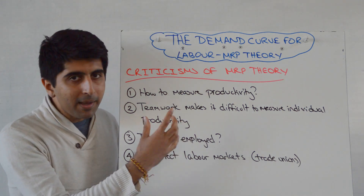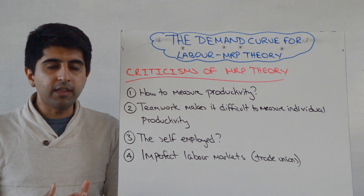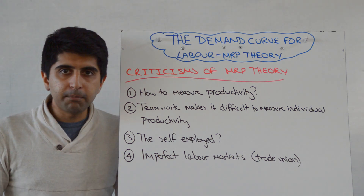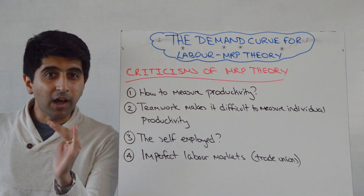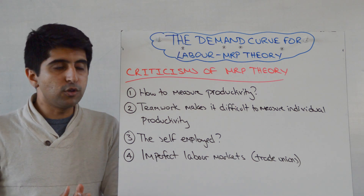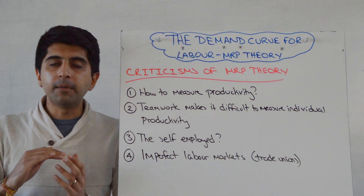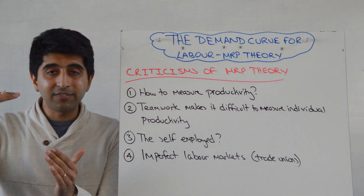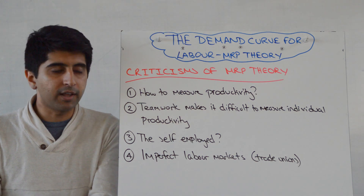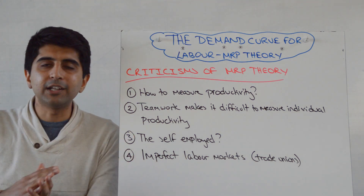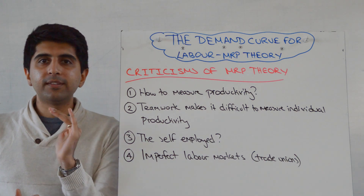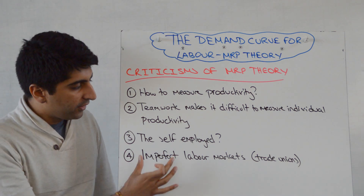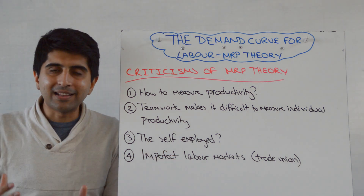We also make the assumption with marginal revenue product theory that we are working with perfectly competitive labour markets. But what if the labour market is not competitive? What if there are trade unions bargaining for higher wages? All of a sudden, the higher wages trade unions are bargaining for might have nothing to do with the marginal revenue product of their workers. Trade unions may want workers to be paid more even if that pay increase exceeds their marginal revenue product, throwing the entire theory into question and going against the idea that workers are always paid according to their marginal revenue product.